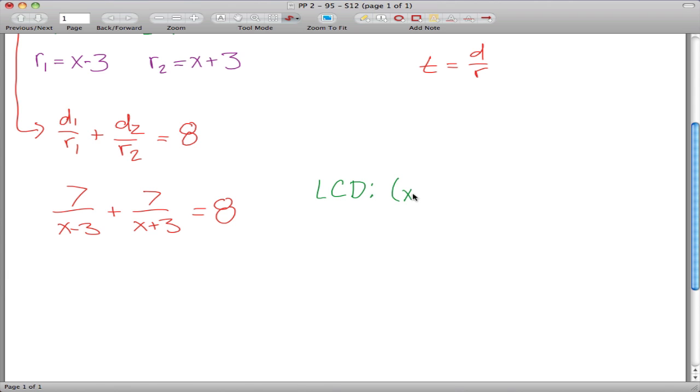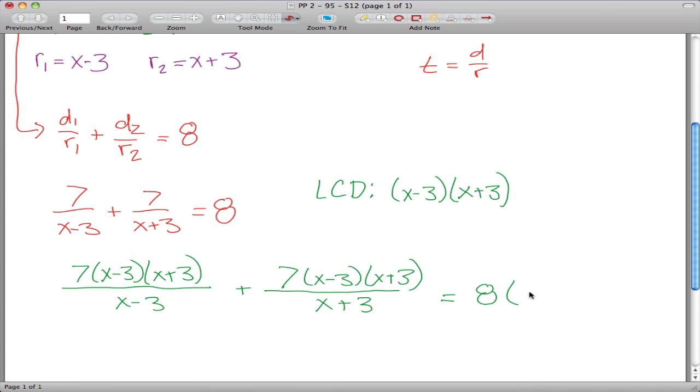what you want to do is find the least common denominator. In this case, it's X minus three times X plus three, so what we're going to do is multiply both sides of the equation by X minus three times X plus three. That gives us seven times X minus three times X plus three over X minus three plus seven times X minus three times X plus three over X plus three, equals eight times X minus three times X plus three.